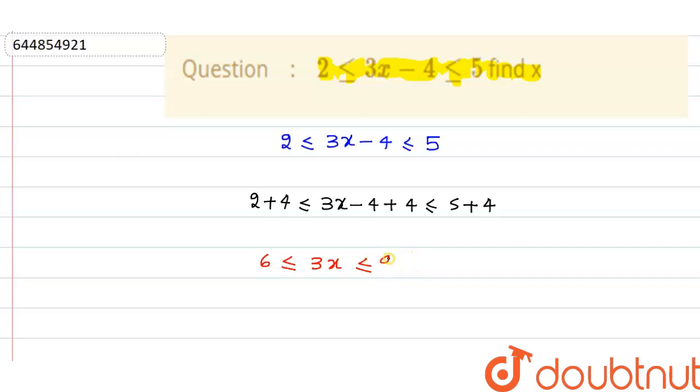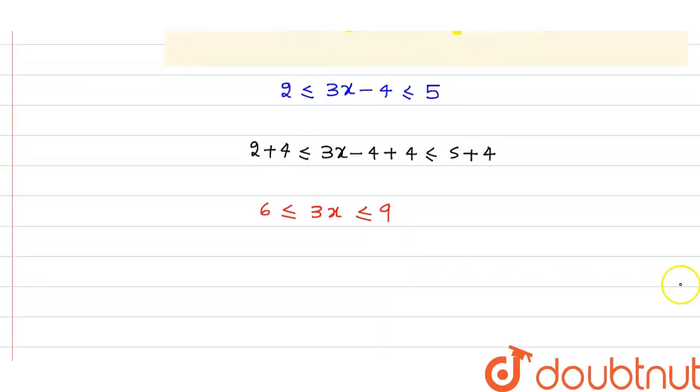Now divide this inequality with 3, so I get 2 less than equal to 3x upon 3, that is x, and this is equal to 9 by 3, that is equal to 3. So I can say that x belongs to the interval 2 to 3. This is our answer. Thank you.